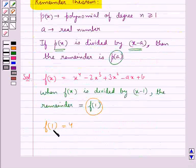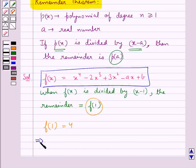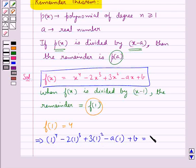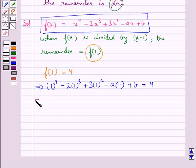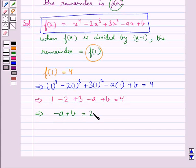Now how do we get f(1)? f(1) is given by substituting x equal to 1 in f(x). So we get 1 to the power 4 minus 2 into 1 cube plus 3 into 1 square minus a into 1 plus b equal to 4. That is, we get minus a plus b is equal to 2. Let this be equation 1.